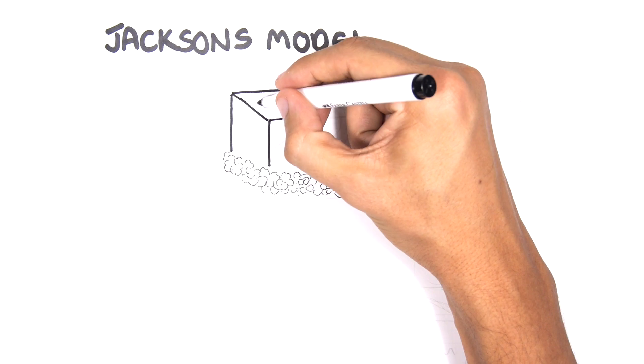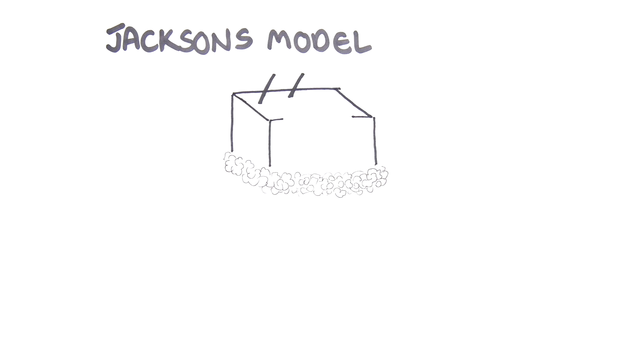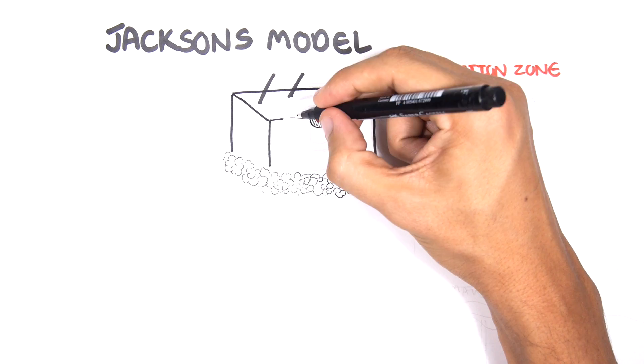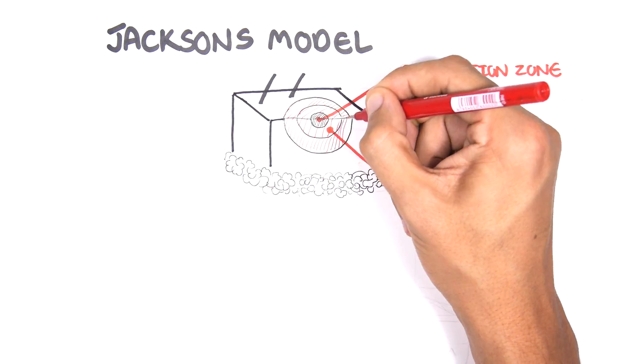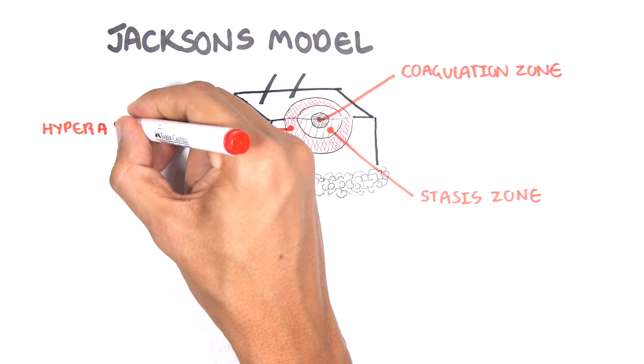These zones of a burn were described by Jackson in 1947, and so it is also called the Jackson model. The first zone is the zone of coagulation, then it's the zone of stasis on the outside, and then the furthest part is the zone of hyperemia.